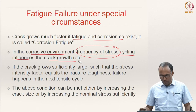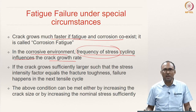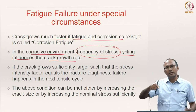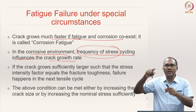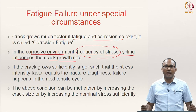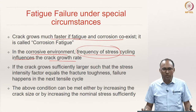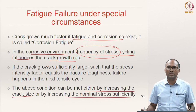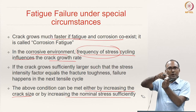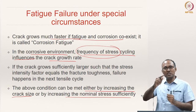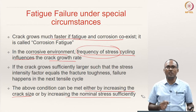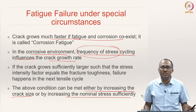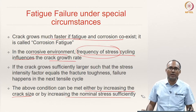If the crack grows sufficiently large such that the stress intensity factor at that crack length equals the fracture toughness, then failure happens in the next tensile cycle. You are cycling the material, the crack length reaches a critical length, and in the next tensile cycle the stress intensity factor ahead of the crack tip equals fracture toughness and the material suddenly fails. This condition is met either by increasing crack size or by increasing the nominal stress — as seen in the large striations corresponding to a stress jump that can make a crack critical.